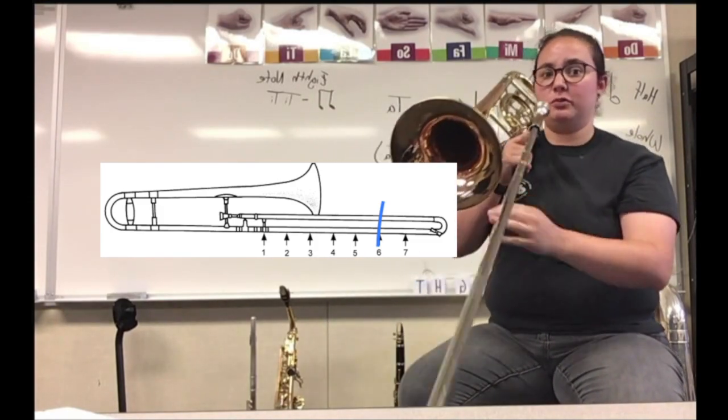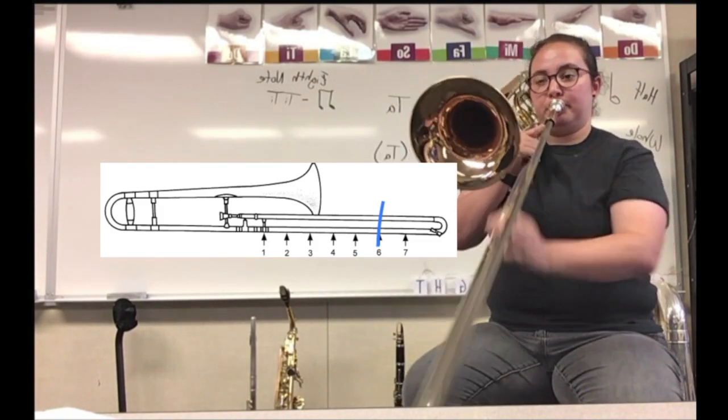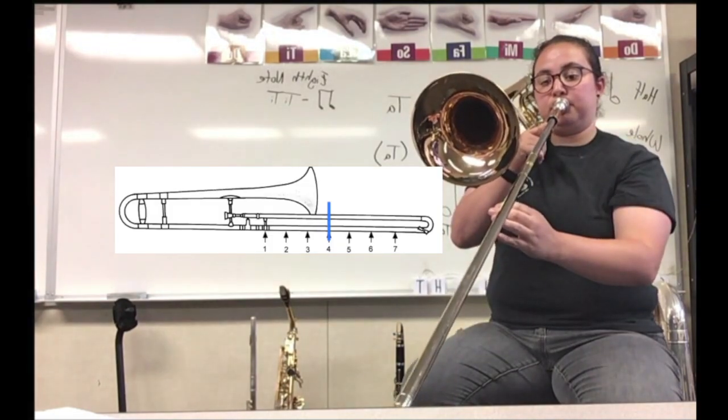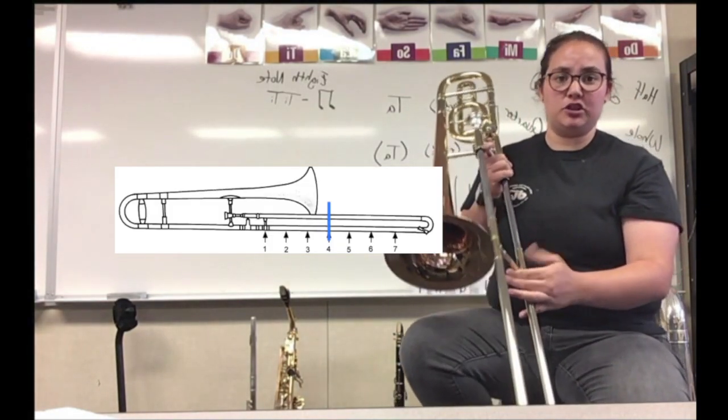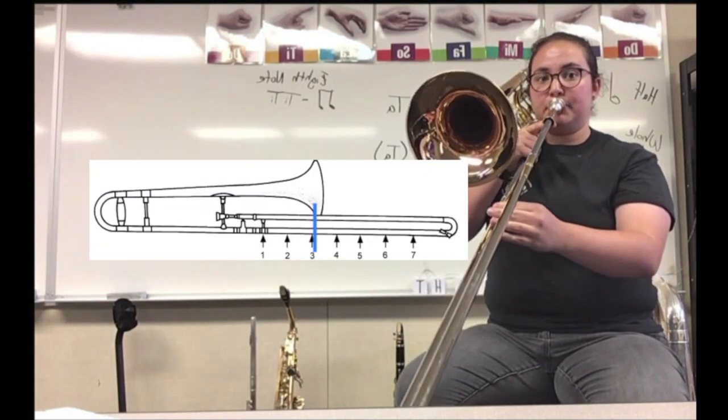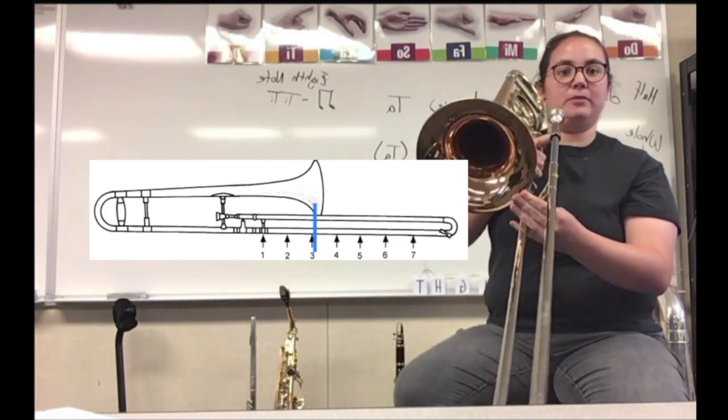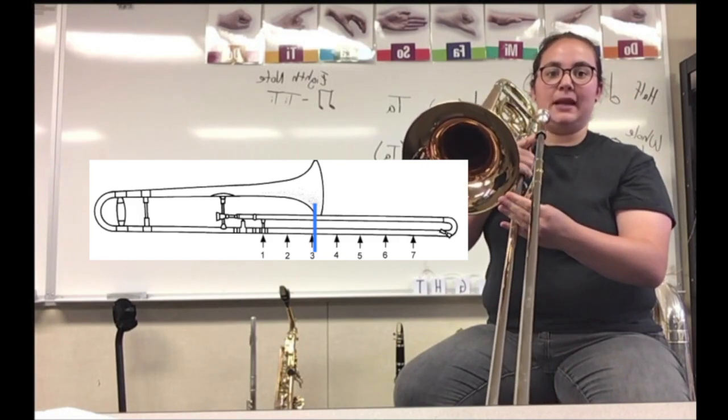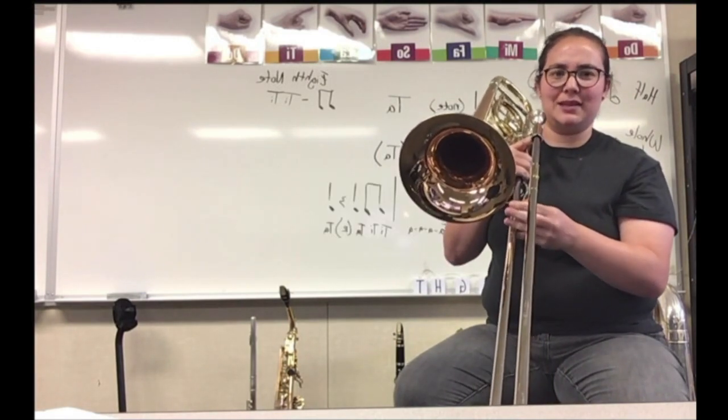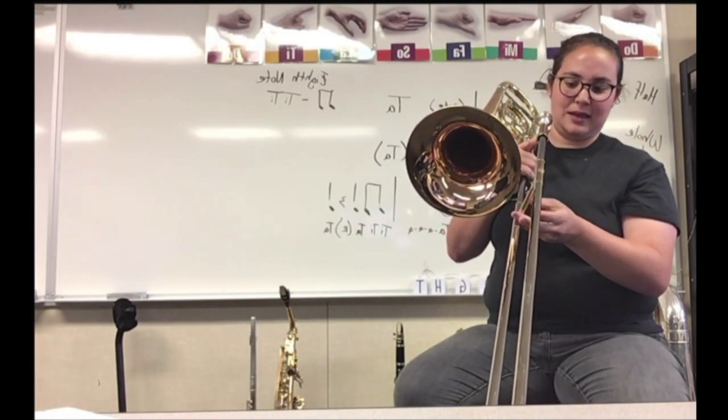And then we're going to want to go to D. So to play D, I'm actually using fourth position. Then E is third position. And notice I kick my little fingertips out. I like to always make sure when I get to third position that I line up that slider with my bell.